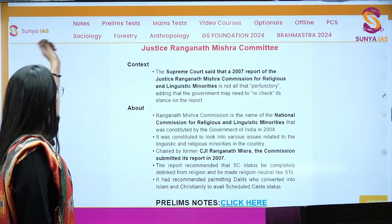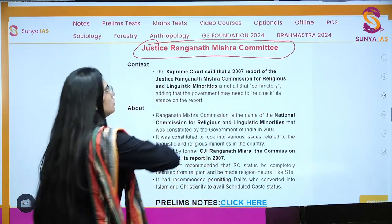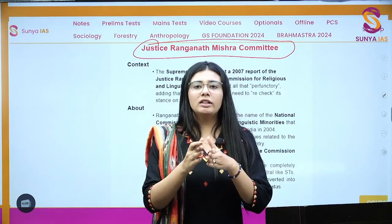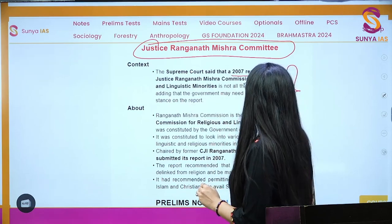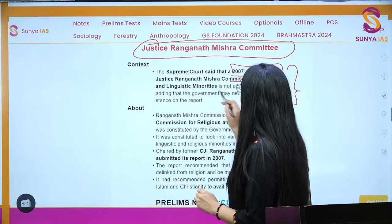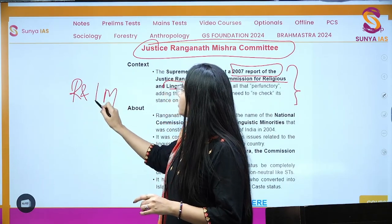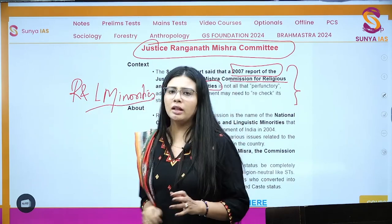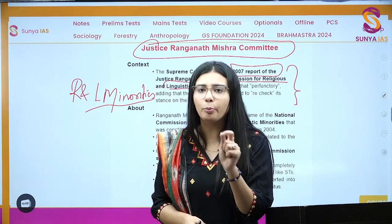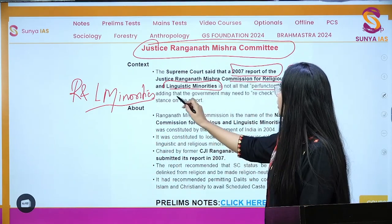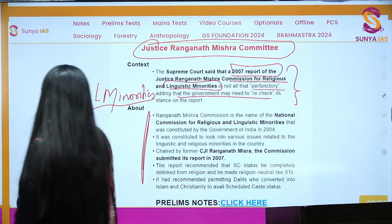The Supreme Court said that the 2007 report of Justice Ragnath Mishra Commission for religion and linguistic minorities needs to be reconsidered. This commission was set up in 2004 and gave its first report in 2007. It is the National Commission for Religion and Linguistic Minorities. One more committee to remember is the Balakrishna Committee, established by the Modi government — I will explain why it matters shortly.